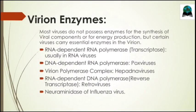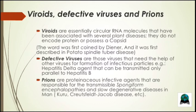There are other virus-like particles: viroids, defective viruses, and prions. Viroids are essentially circular RNA molecules without any protein or capsid; the word was first coined by Diener and was described in potato spindle tuber disease. Defective viruses are those that are transmitted only with the help of other viruses — for example, the hepatitis delta agent, which can be transmitted only in parallel with hepatitis B; without it, it is not infective. Prions are proteinaceous infective agents that lack nucleic acids and are responsible for many transmissible spongiform encephalopathies and slow degenerative diseases of the brain in humans, such as Kuru and Creutzfeldt-Jakob disease.